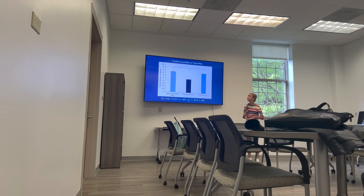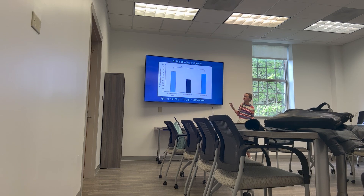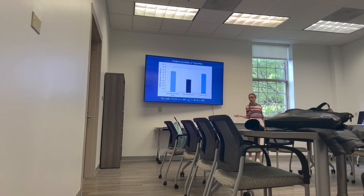Looking at positive qualities of the vignettes: as participants read each vignette, they answered questions about how they felt about the individual depicted. I conducted a between-subjects ANOVA and found a significant main effect for group for positive qualities with a pretty large effect size. There was a significant difference between the counter-stereotypical group and the stereotypical group, and between the stereotypical group and the control group; however, there was no significant difference between the counter-stereotypical group and the control group.